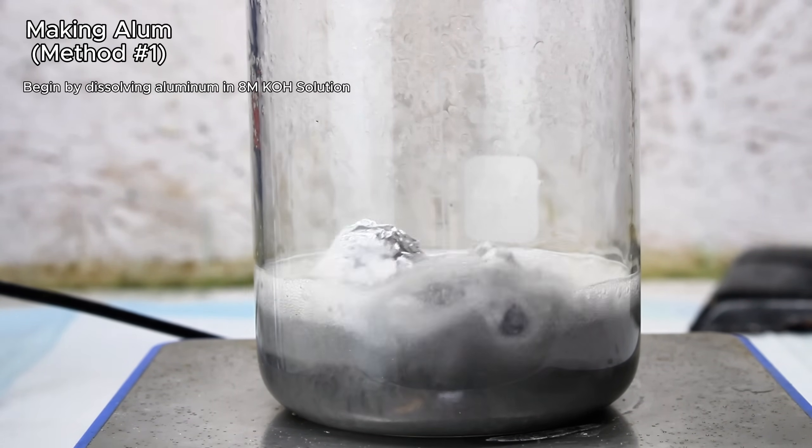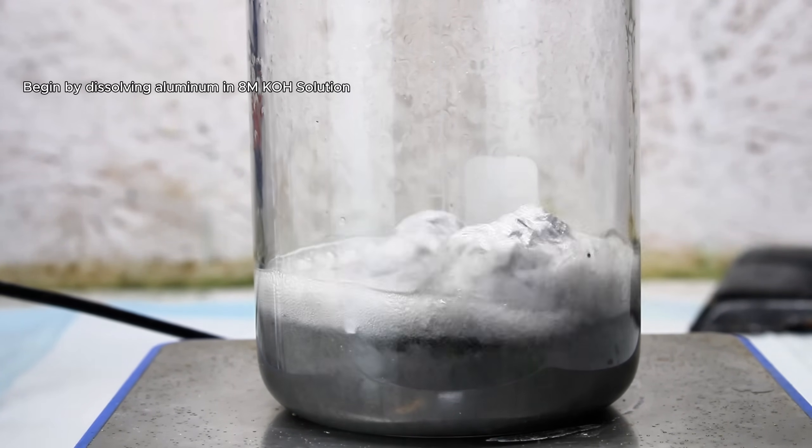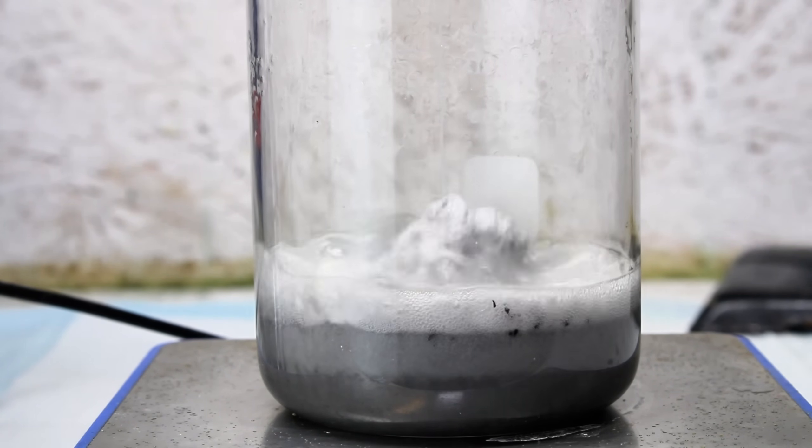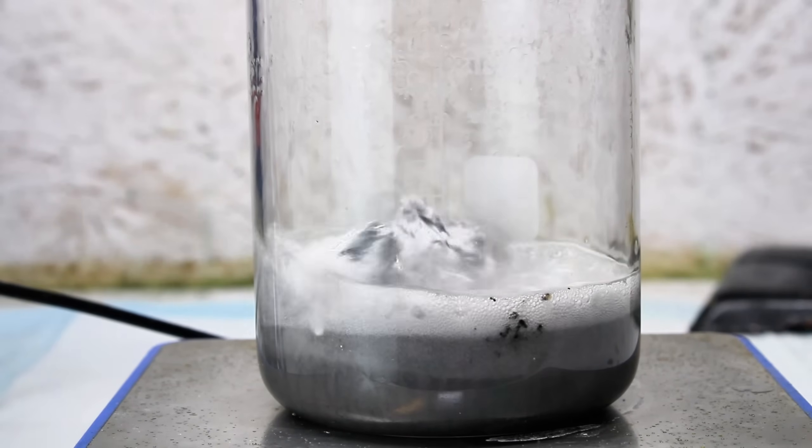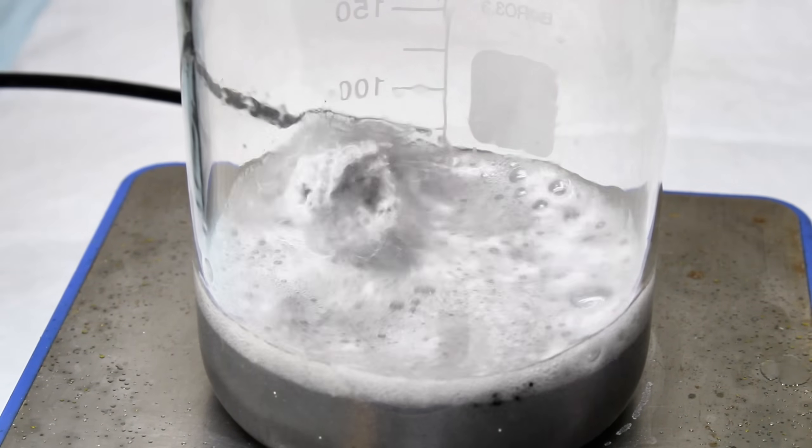Anyway, to get started making alum, I needed to dissolve some aluminum metal in a concentrated solution of potassium hydroxide. And my source of aluminum here is simply aluminum foil. And potassium hydroxide is typically sold as caustic potash by soap making suppliers.